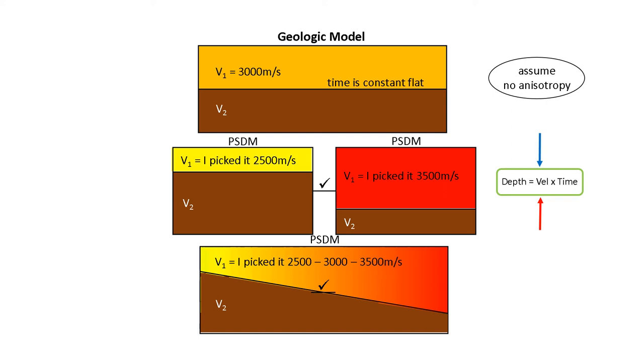Depth migration works great, but you have to have the velocities correct. If they're either constantly too wrong or they're laterally too wrong, you can end up with issues. There are a number of ways to come up with depth velocities for depth migration. They're all tricky, but they can all work if you do them right.